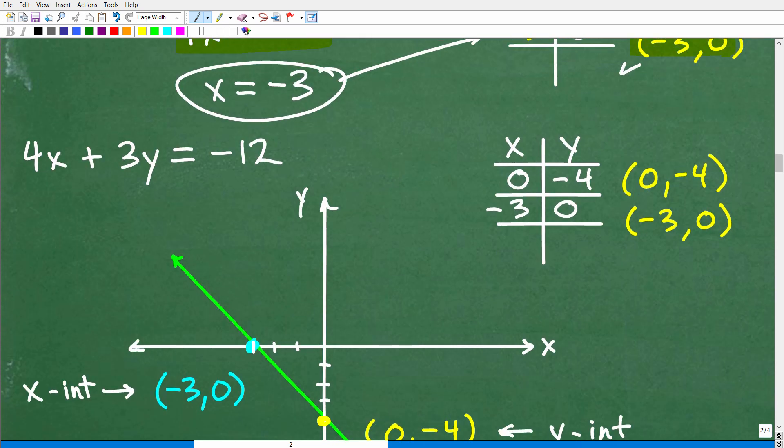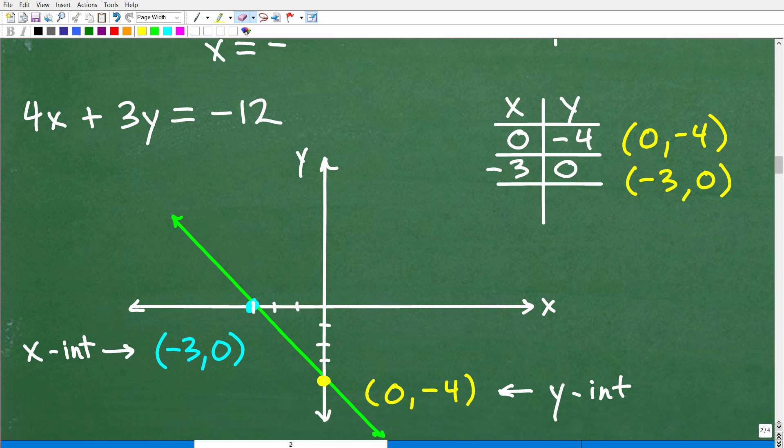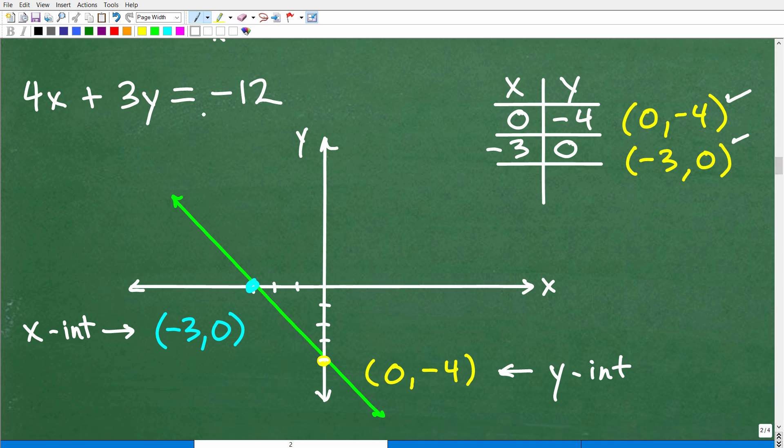How many points do we need to graph a line? You only need two points to graph a line. And here we have two coordinates. So here's our table of values. Here are our two coordinates that we've figured out. Let's go ahead and first plot this point: 0, negative 4. X is 0, Y is negative 4. So that's 1, 2, 3, 4. Plot that point.